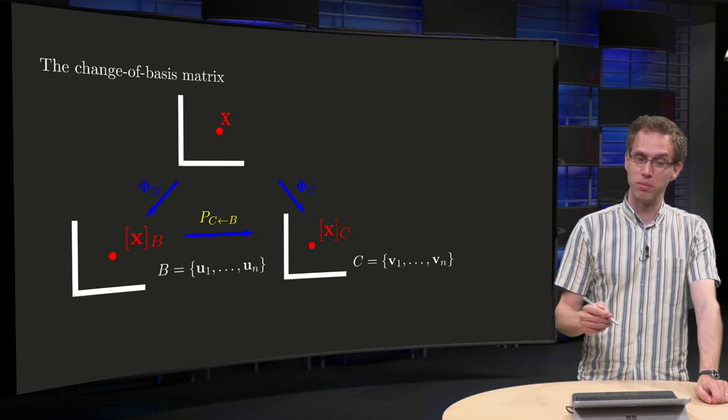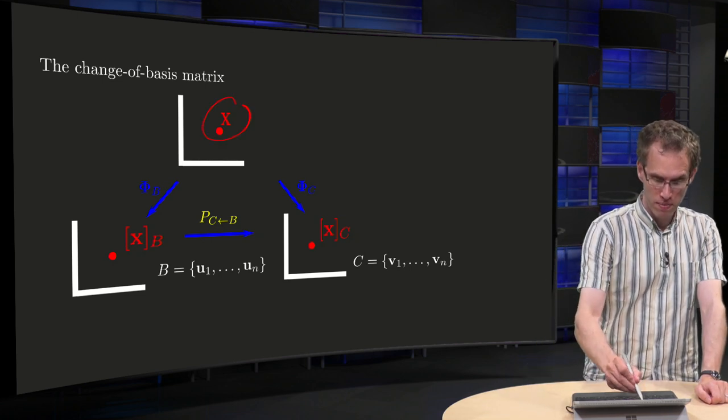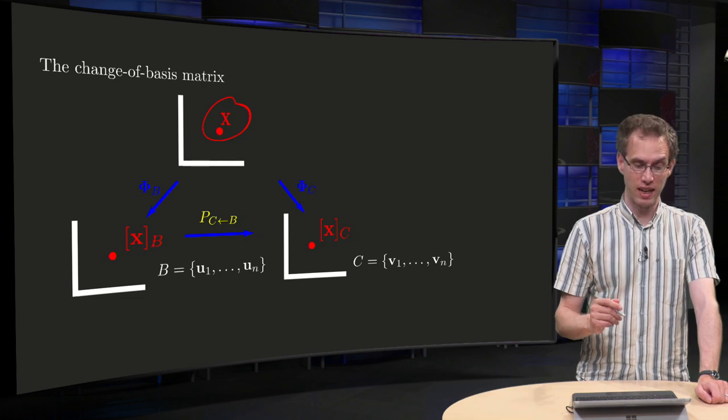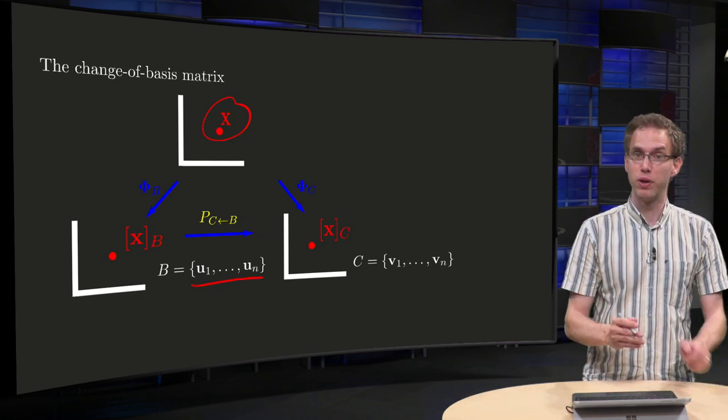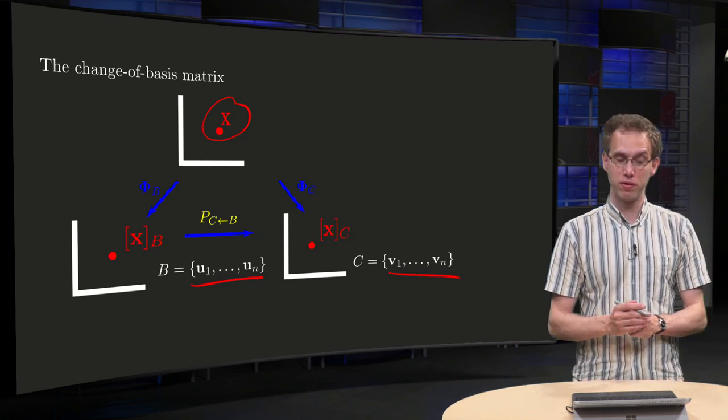So what's the setting? We have some general vector space and some vector x in that. Then we have two bases: B consisting of u_1 up to u_n, and C consisting of v_1 up to v_n.